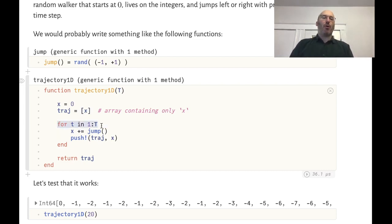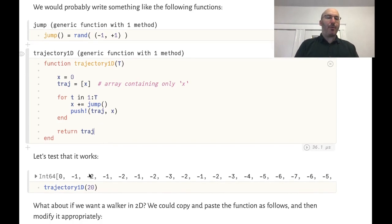Then we'll do a loop over all times and at each step we'll modify the position of this particle by adding this random jump, and then we're going to store the current value of x in this variable called traj. We'll return the trajectory at the end of the function and we can run the function and we see that it works.